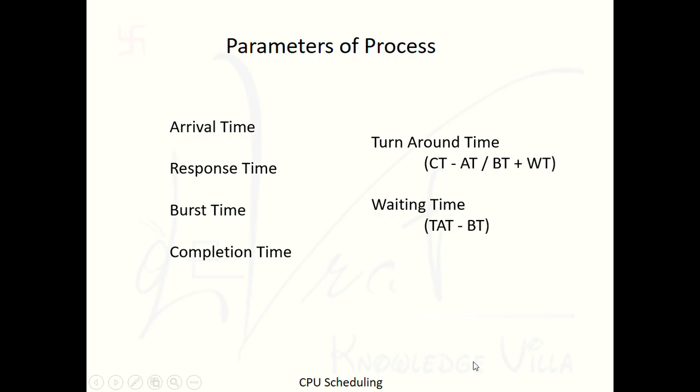After understanding these process parameters, in the next session I will teach the various types of CPU scheduling in detail — including implementation of FCFS, SJF, Priority, and Round Robin algorithms. Hope you are learning well. Thanks for watching Devrat Knowledge Villa.